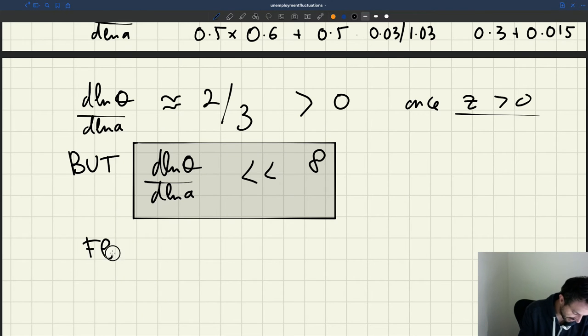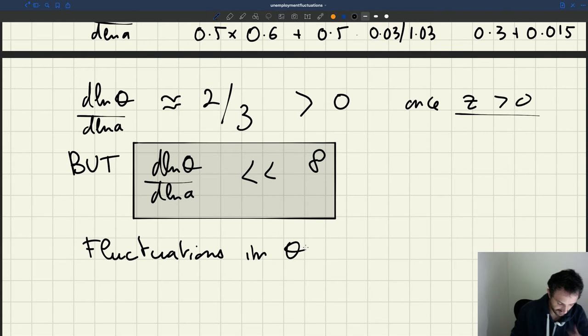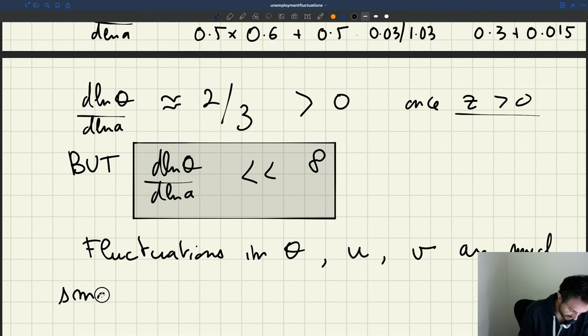So the fluctuations in tightness, the fluctuations in theta, and of course because they drive directly the fluctuations in unemployment rate and the fluctuations in vacancy rate, they are going to be much, much smaller than in US data.